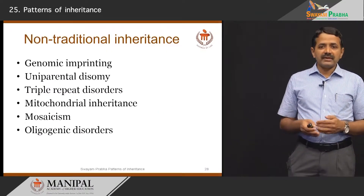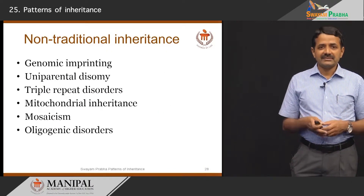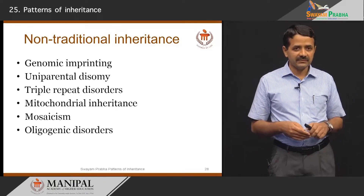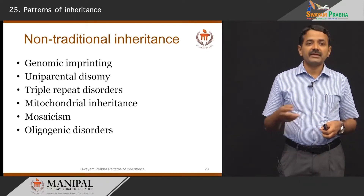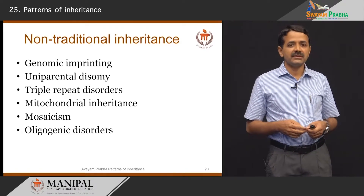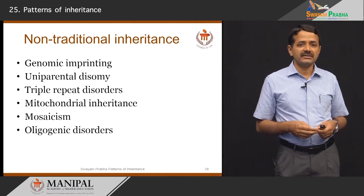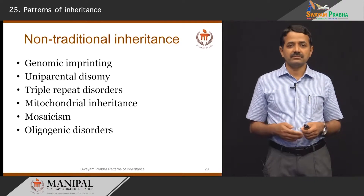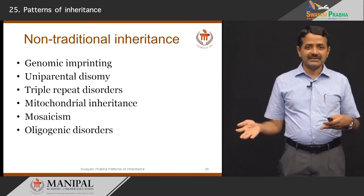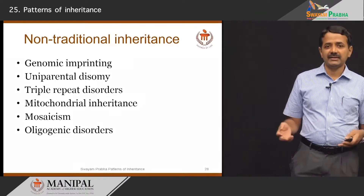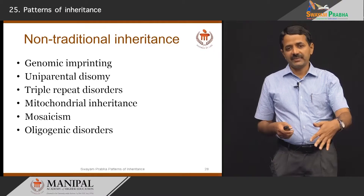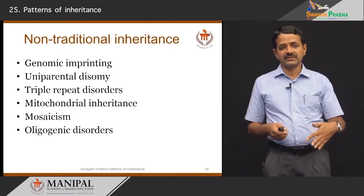Over the next few slides I will discuss non-traditional inheritance patterns, also called non-Mendelian inheritance, which include genomic imprinting, uniparental disomy, triplet repeat disorders, mitochondrial diseases, mosaicism, and oligogenic disorders. These do not follow typical Mendelian inheritance patterns as discussed so far.